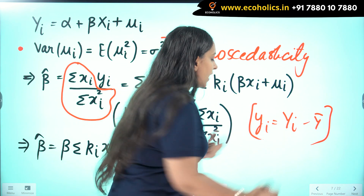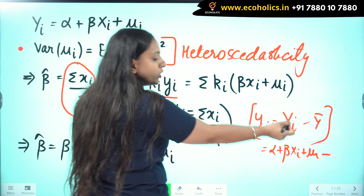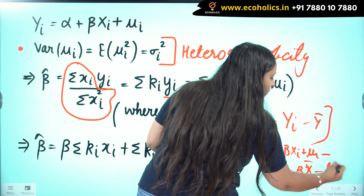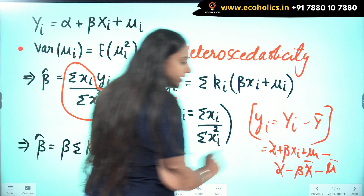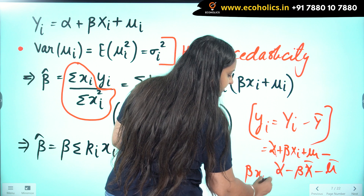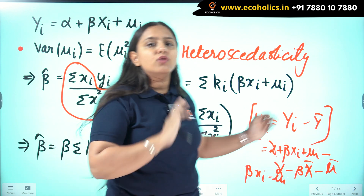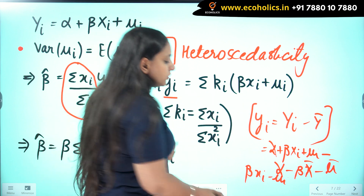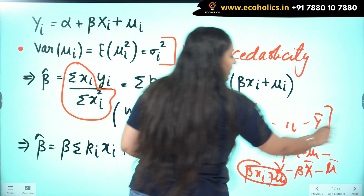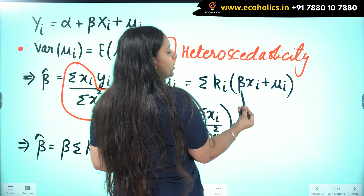In deviation form, yi means yi minus y bar. Writing out yi as alpha plus beta xi plus mu i and subtracting y bar — which is alpha plus beta x bar plus mu bar — alpha cancels. Since the expectation of the error term is zero, mu bar is zero. So in deviation form, the intercept disappears and we are left with beta xi plus mu i.